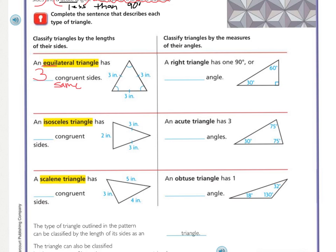Moving down, we have an isosceles triangle. How many sides are congruent? Well, three inches, three inches — those two are the same — and then two inches, which is different. So there are two congruent sides. The way I remember isosceles triangle is: I saw Solis and her twin, because twins can be identical, meaning they're the same physically. And so three and three — that's two of them that are the same.